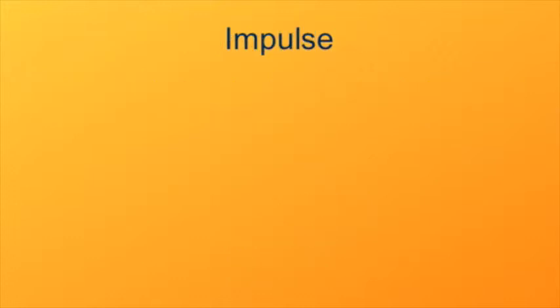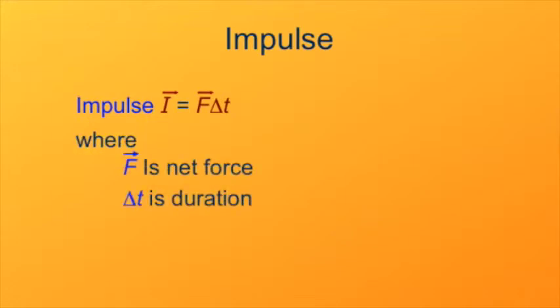The quantity impulse is defined as force through a time - that is, the force times the time over which it acts. As indicated by the notation with a vector arrow, impulse is a vector. It's the result of multiplying a vector, the force, by a scalar, the time.